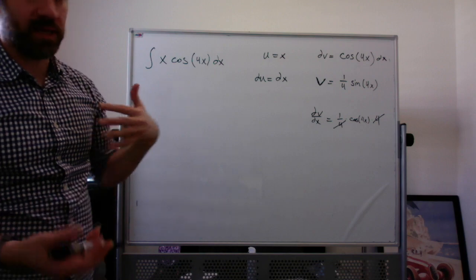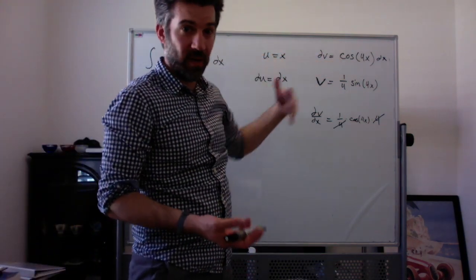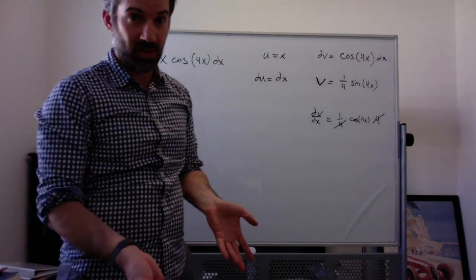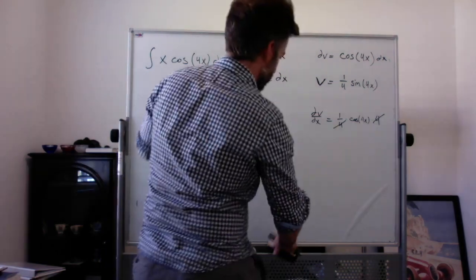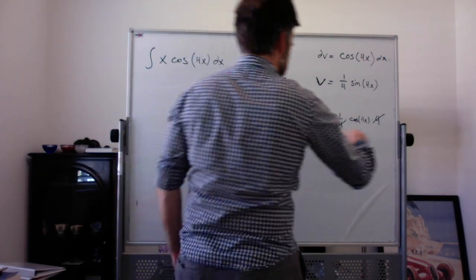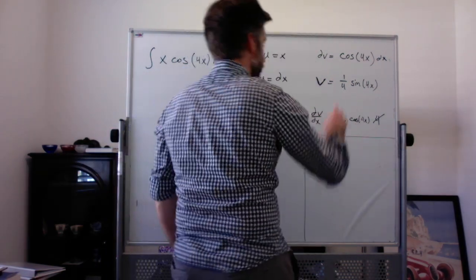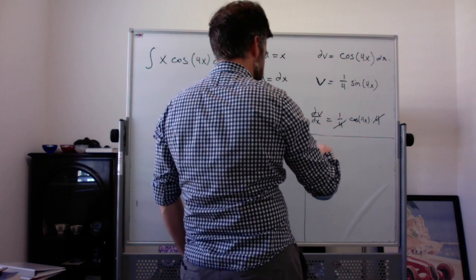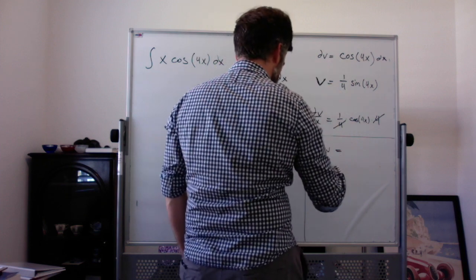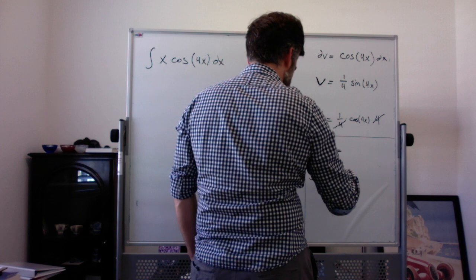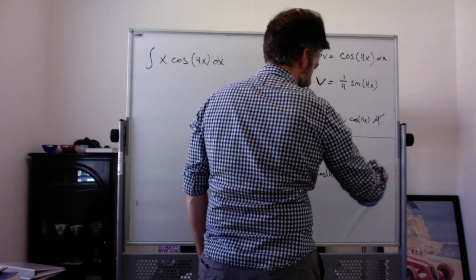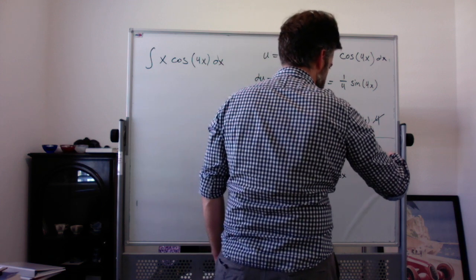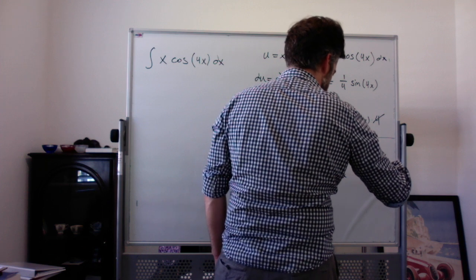I want you to be able to anti-differentiate cosine of 4x without having to write out the whole u substitution. You could write the u sub, it's a pain in the butt. If I did that, you could say, well, so to find v, I'm going to integrate dv, which means I'm going to integrate cosine of 4x. I would do a u sub as u equal 4x. du would be 4 dx, so 1 fourth du.